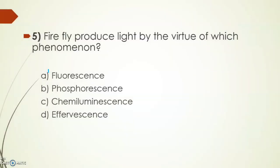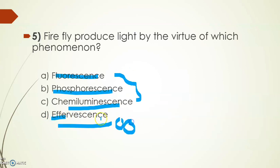Firefly produces light by the virtue of which phenomenon? Fluorescence, phosphorescence, chemiluminescence, and effervescence. Except effervescence, all these three options are related to light. Effervescence means the bubbles produced in a chemical reaction. These three phenomena are related to light, and among them, due to chemiluminescence fireflies produce light, means the production of light through chemical reaction.